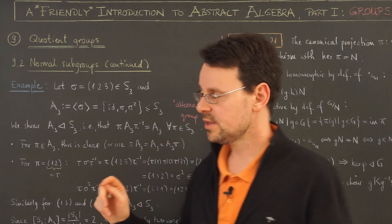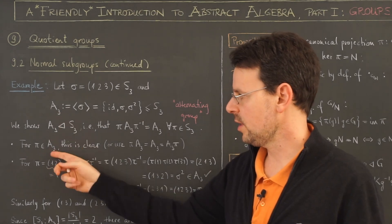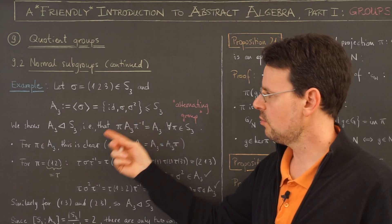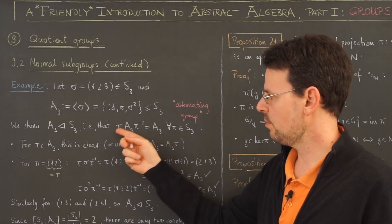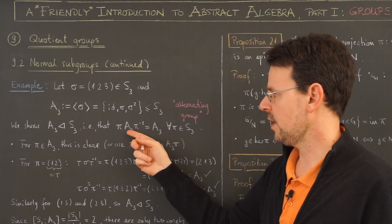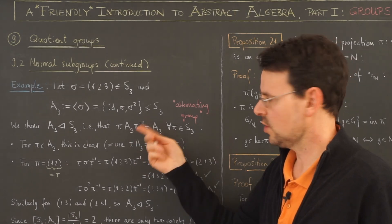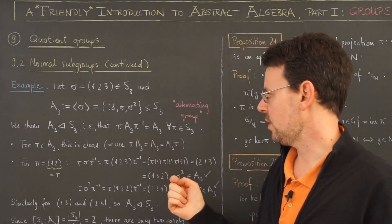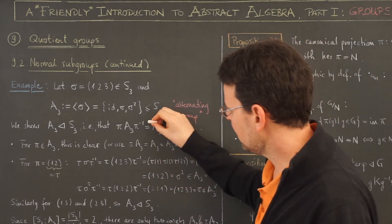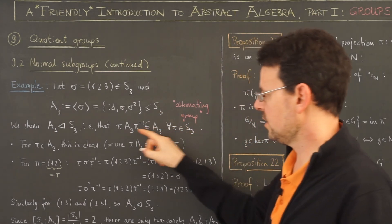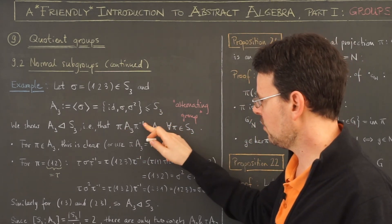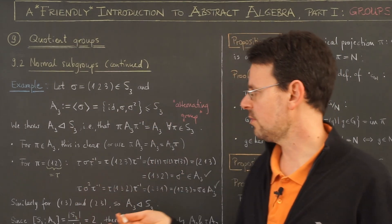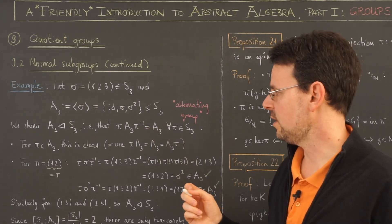So there are two cases. If pi is an element of A3, this is of course trivial because A3 is a subgroup. So taking this product here, pi times any element of A3 times pi inverse, which again must be an element of A3, is clearly an element of A3. So this shows that this is contained in A3, but we showed in the last lesson that this is already enough to have equality here.